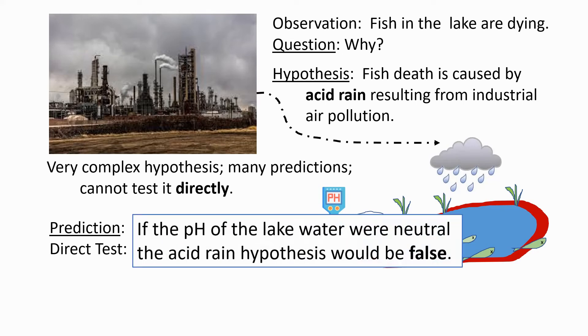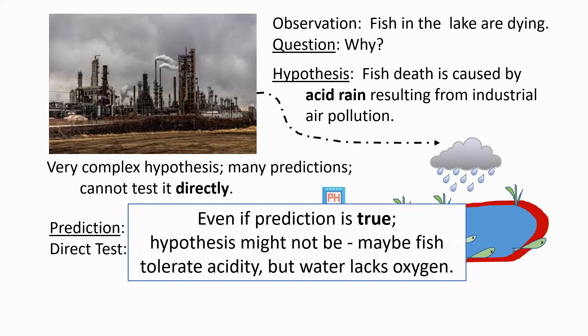Notice that if the pH of the lake water were neutral, the acid rain hypothesis would be false. But also notice that even if the prediction is true, the hypothesis might or might not be true. Maybe the fish tolerate the acidity quite well, but the water lacks oxygen.